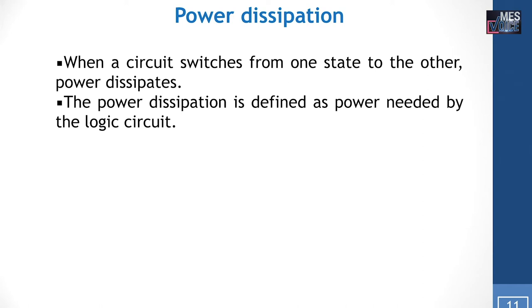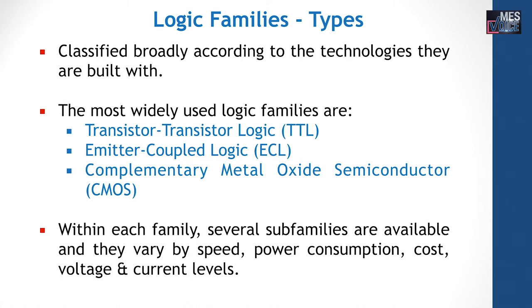Coming to power dissipation: when a circuit switches from one state to another, power dissipates. Power dissipation is defined as the power needed by the logic circuit. Logic families are classified broadly according to the technologies they are built with. The most widely used logic families are transistor-transistor logic (TTL), emitter-coupled logic (ECL), and complementary metal oxide semiconductor (CMOS). TTL and ECL are based on bipolar junction transistors (BJTs), while CMOS is based on MOSFETs. Within each family, several sub-families are available and they vary by speed, power consumption, voltage, and current levels.